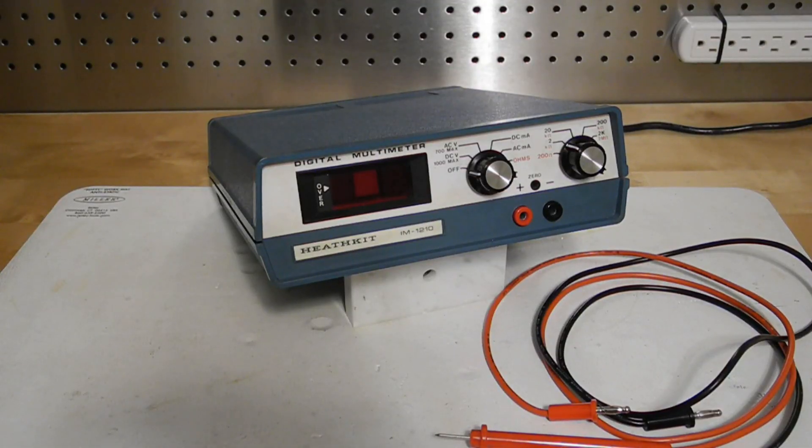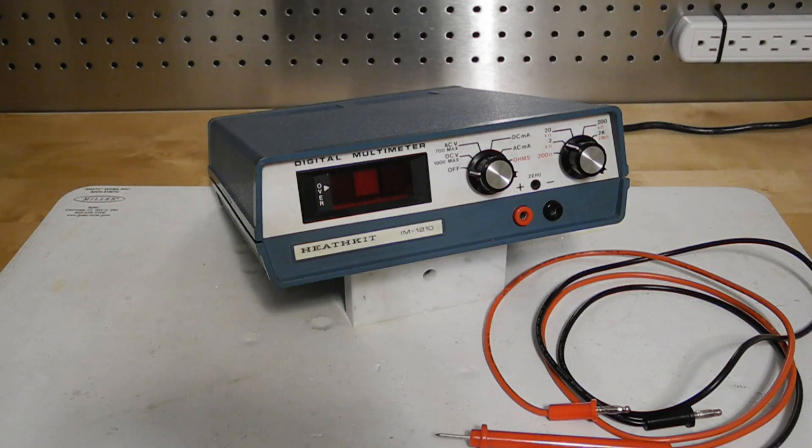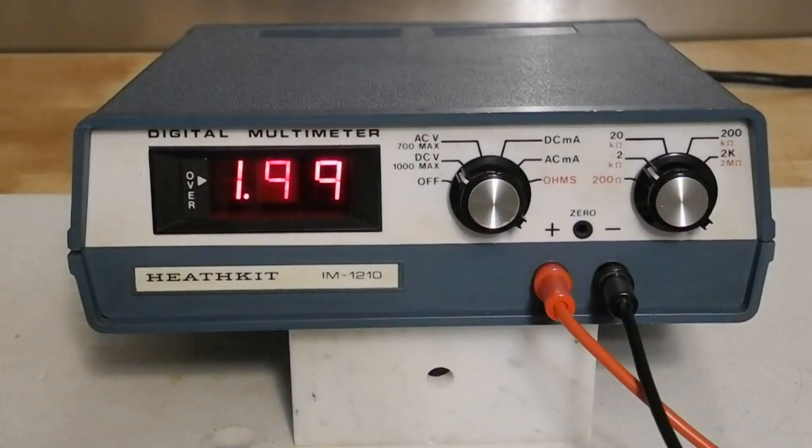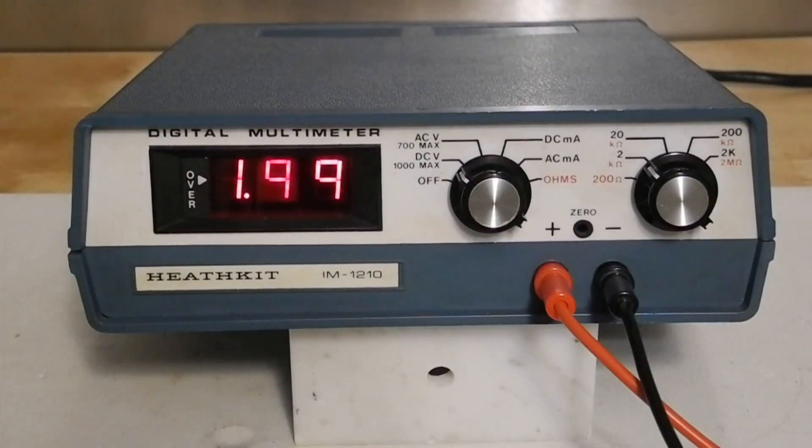The IM1210 is a digital multimeter that can measure DC and AC voltage and current and resistance. It's solid state and uses red seven segment LEDs for display. The display is two and a half digits, meaning that it can display counts from zero to 199. A vertical over segment indicates if the measured value is out of range, and a minus sign lights up if the input voltage or current is the wrong polarity.